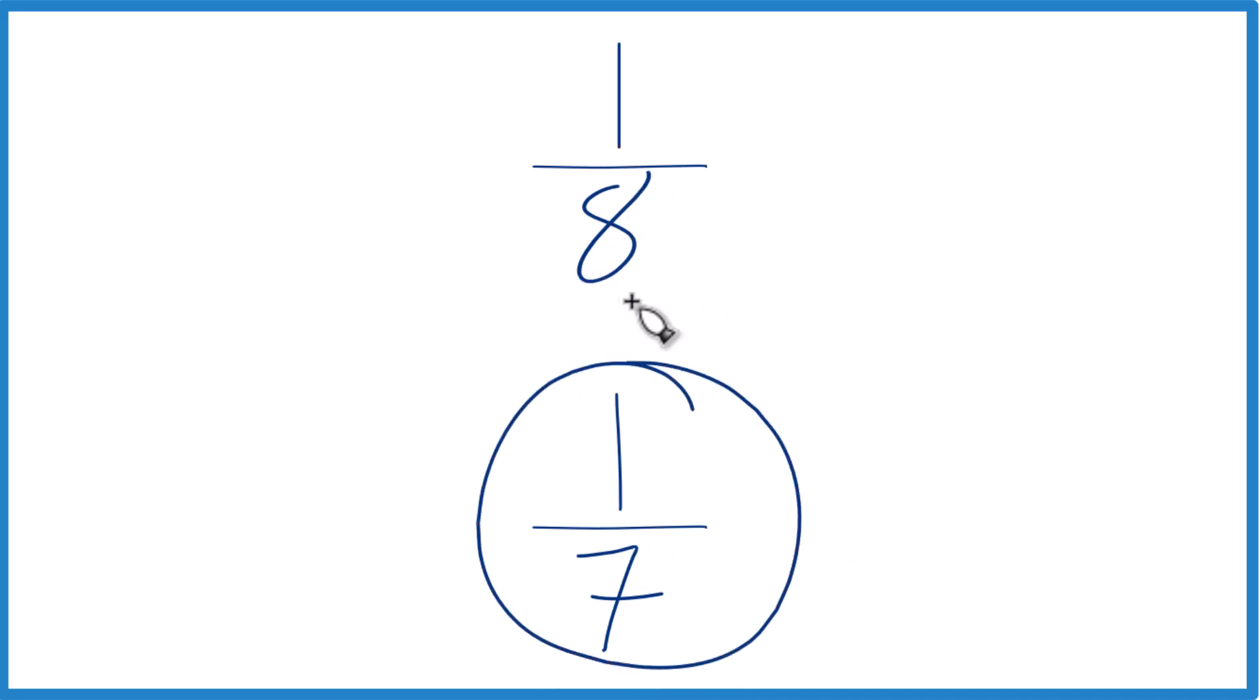We could also do it this way. We could find a common factor, common denominator here. Something that 8 and 7 both go into evenly. So how about just 8 times 7? Because that'll give me 56.